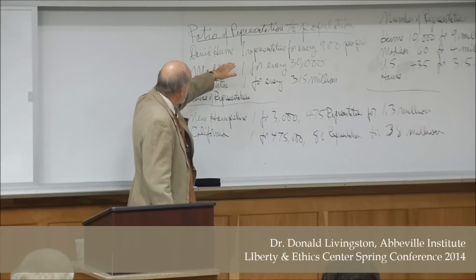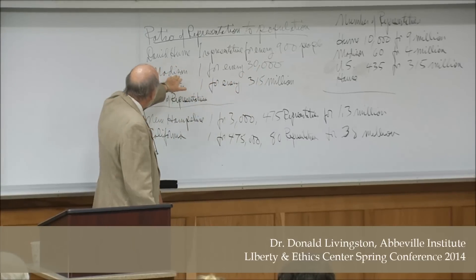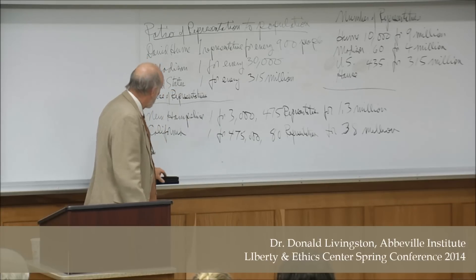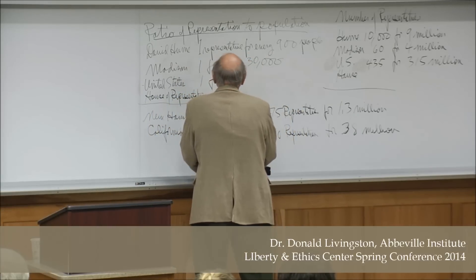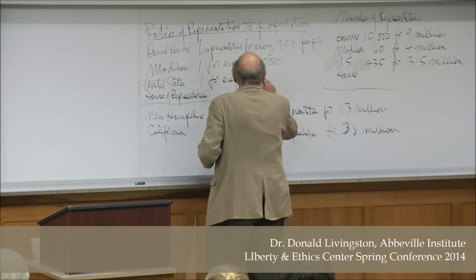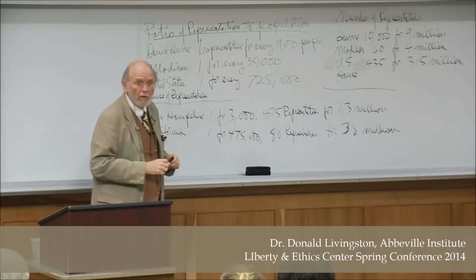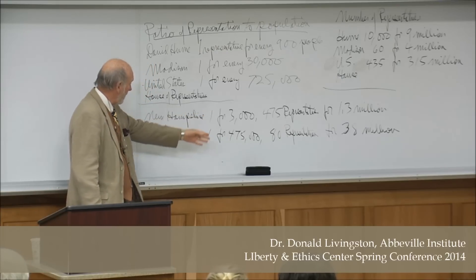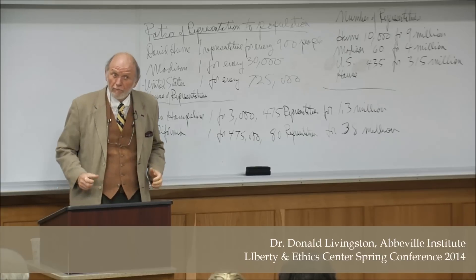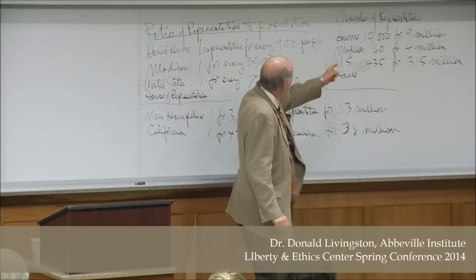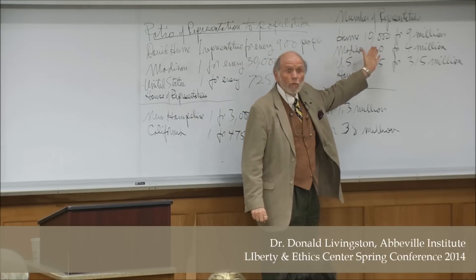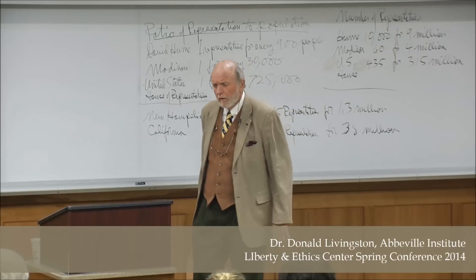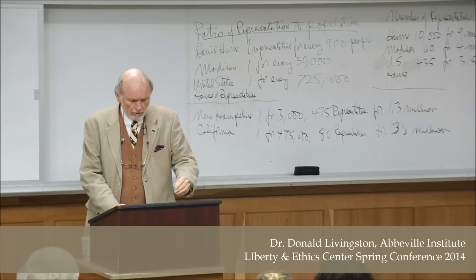David Hume, in his constitutional republic, has one representative for every 900 people. Madison says there should be one for every 30,000 people. In the United States today it's one for every 725,000 people. That's what we have — doesn't look too good, does it? New Hampshire has one for every 3,000 people; California has one for every 475,000 people. Hume has 10,000 representatives in his constitution, Madison has 60 in the House of Representatives, and the U.S. today has 435.